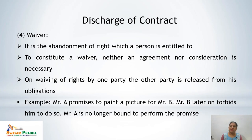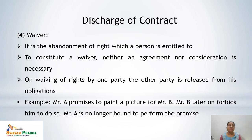Next is waiver — the abandonment of a right to which a person is entitled. To constitute a waiver, there is no need of any agreement or consideration. When one party waives its rights, the other party is released from obligations. For example, if A promises to paint a picture for B and B later forbids him to do so, A is no longer bound to perform the promise. Waiver leads to discharge of contract — the other party is automatically released from obligations.